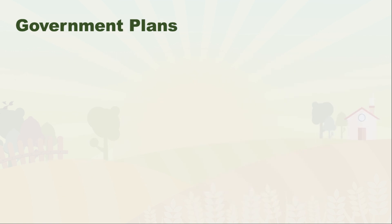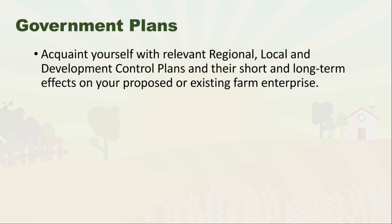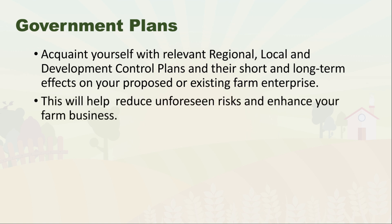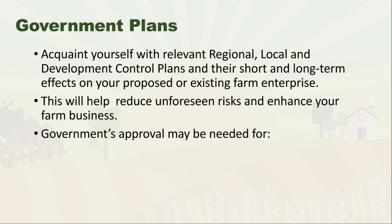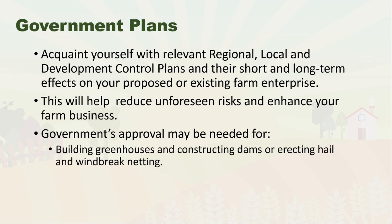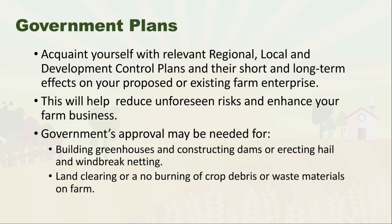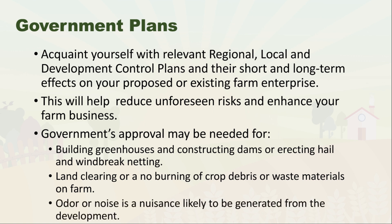Before we establish buildings on our garden, we should get permits from the government. Acquaint yourself with relevant regional, local, and development control plans and their short and long-term effects on your proposed or existing farm enterprise. Government approval may be needed for building greenhouses, constructing dams, erecting hail and windbreak netting, land clearing, no-burn of crop debris, or if odor or noise nuisance is likely to be generated from the development.